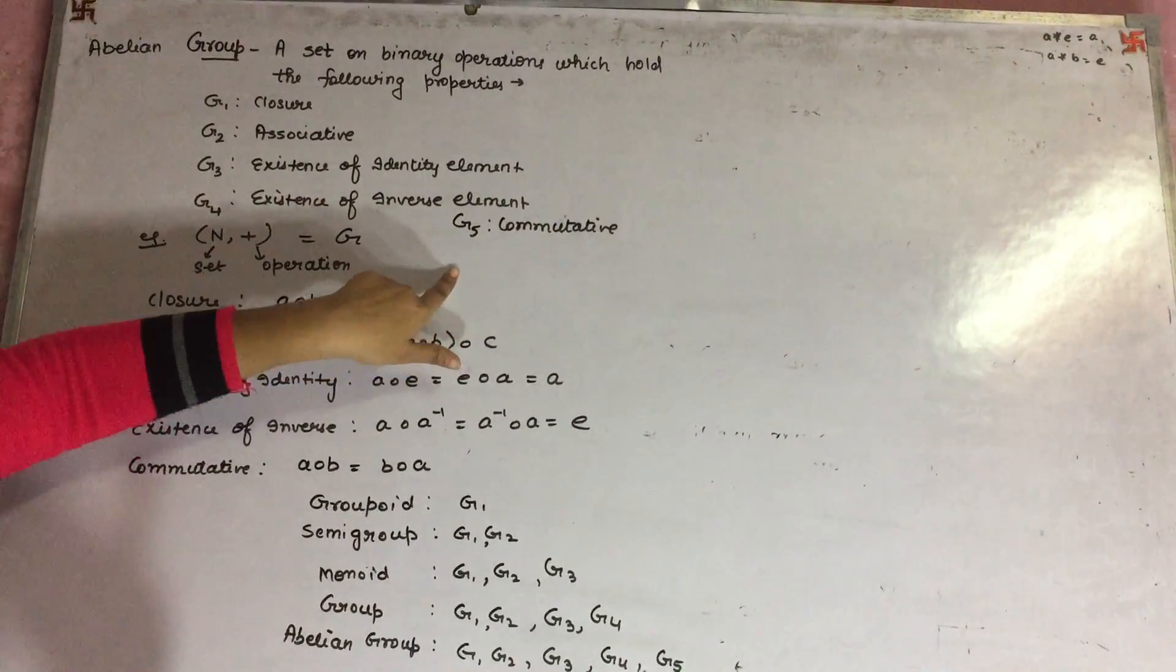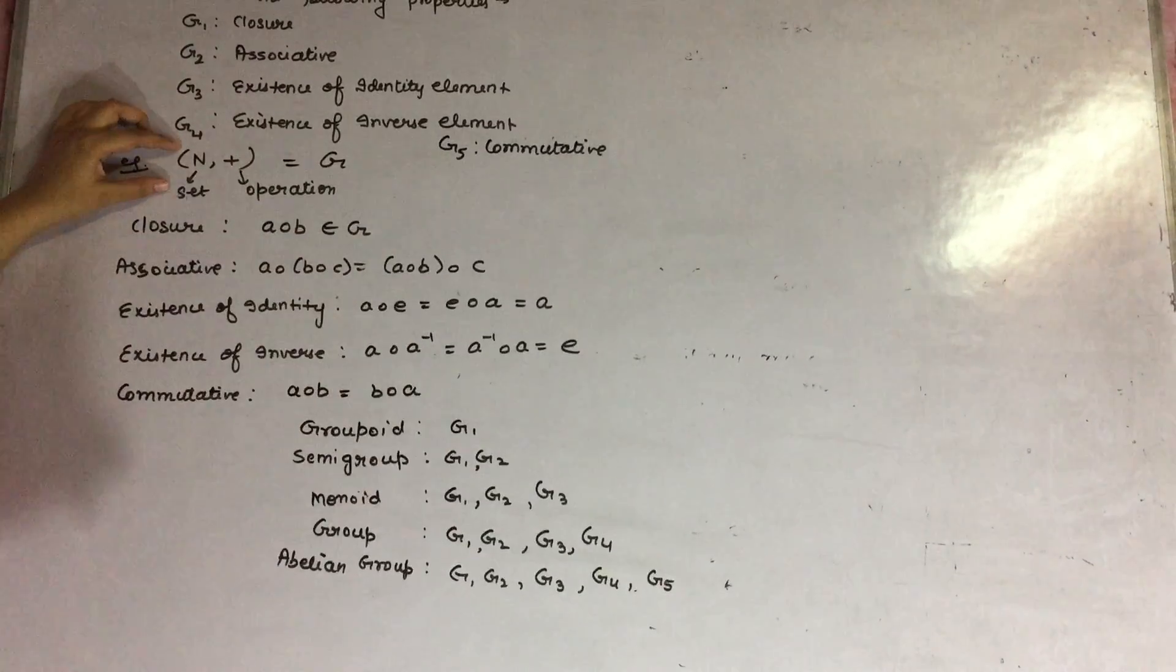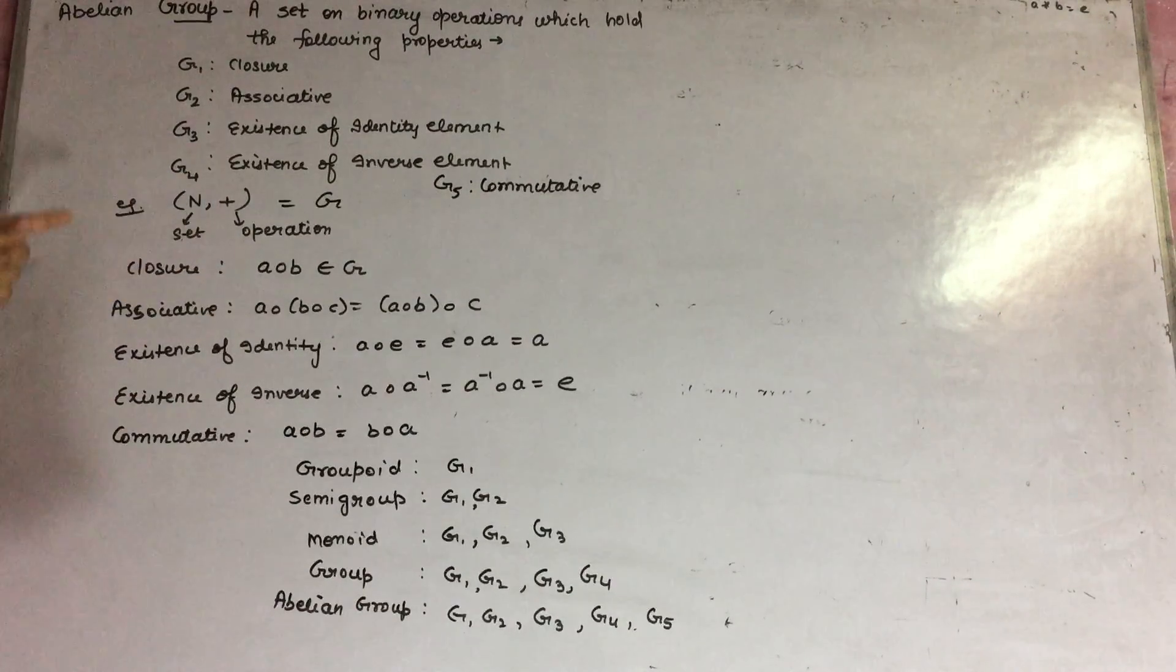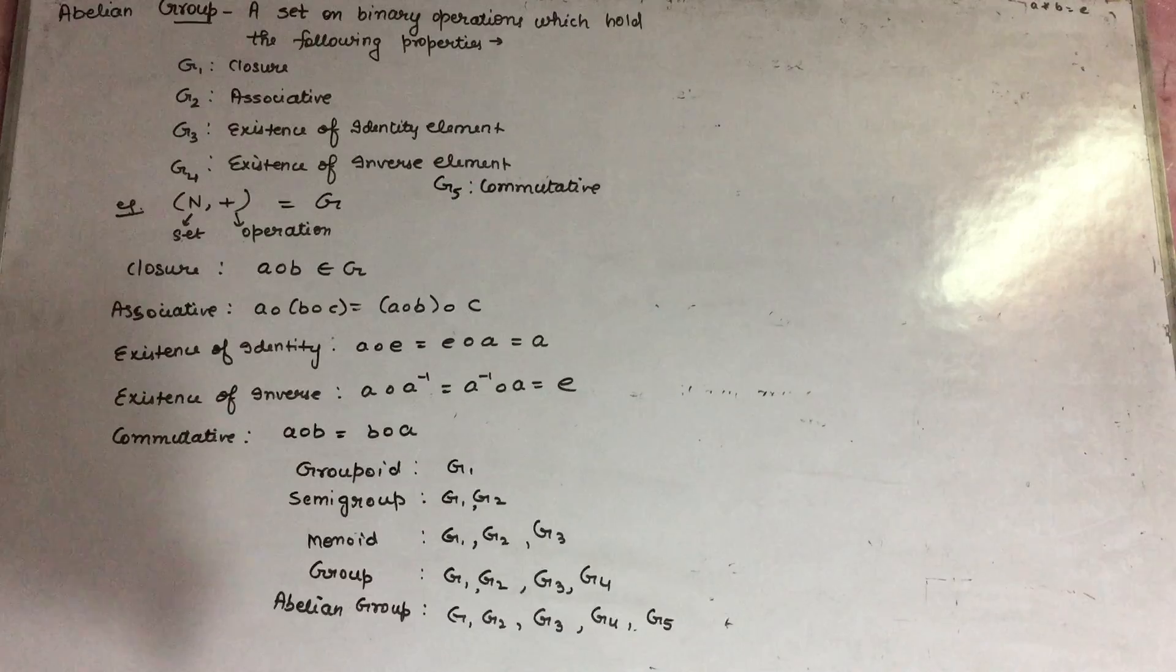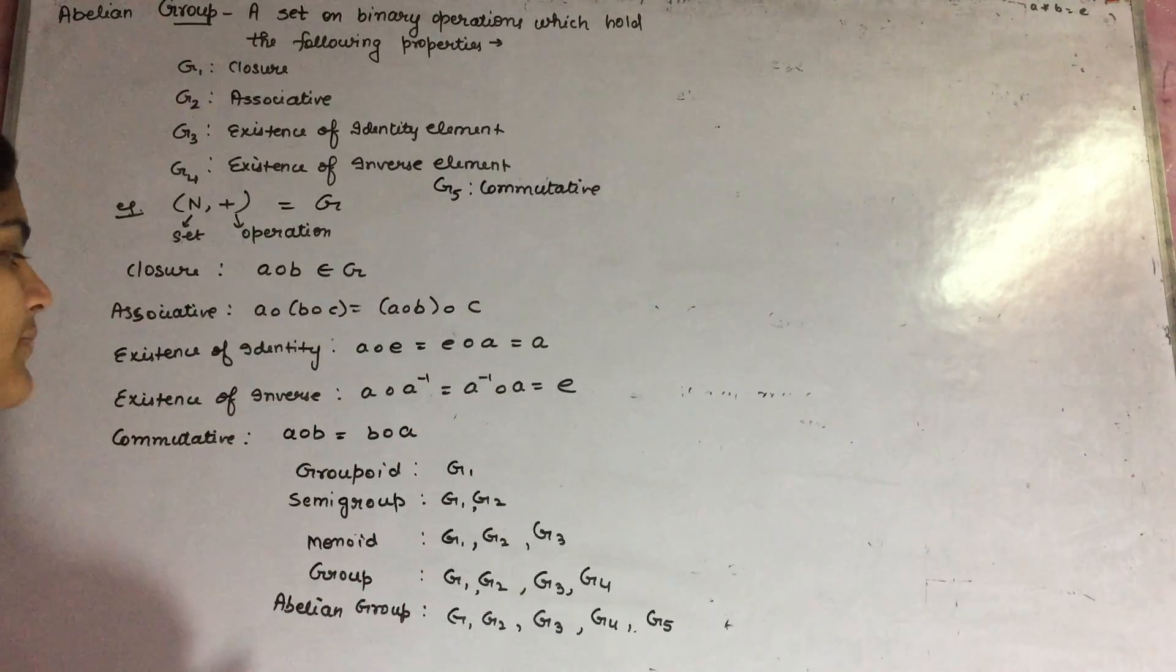So let us see here. Now there are five properties. And if we take the example of natural numbers and on it the operation is addition, then it already holds closure, associative, existence of identity and inverse, we have seen this so far.